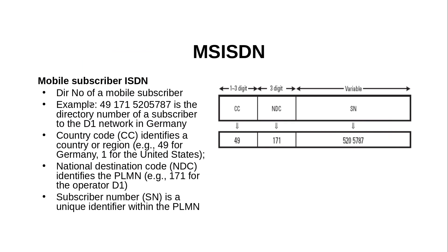Then you have the MSISDN — Mobile Subscriber ISDN Number. This is the number used for calling purposes. For example, when I want to call someone else I will use his MSISDN, and each one of us knows this number. It is composed of the Country Code — the dialing code of a country, in this case 49 which is the dialing code of Germany — then you have the National Destination Code, which is the code for dialing a specific mobile operator in Germany, which is D1 in this case, and then you have the serial number assigned by the D1 operator, which is 5205787.